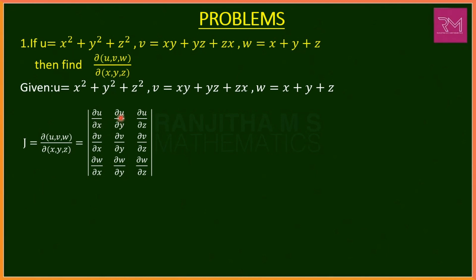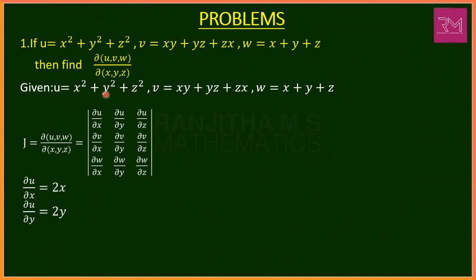First, find del u/del x, del u/del y, del u/del z for u = x² + y² + z². Treating y and z as constant, del u/del x = 2x. Treating x and z as constant, del u/del y = 2y. Similarly, del u/del z = 2z.